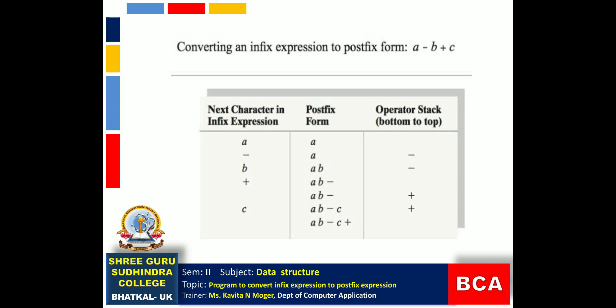Let us consider the example: A minus B plus C. This is an infix expression. The first symbol is A — it is an operand, so we paste it directly into the postfix output. Next comes minus — it is an operator, so we push it onto the stack. Next is B — it is an operand, so we place it directly after A. Then comes plus — as it is an operator, we need to push it onto the stack. But according to rule number 2, no two operators of the same priority can stay together.